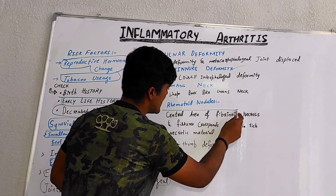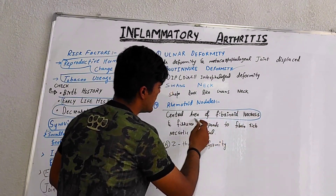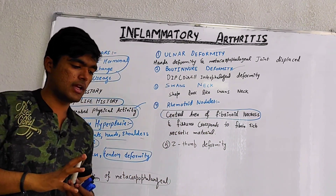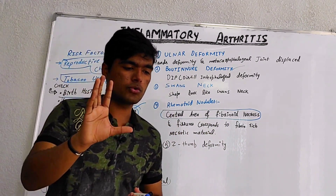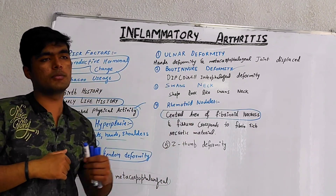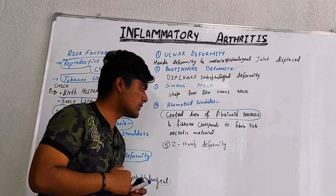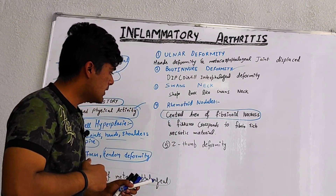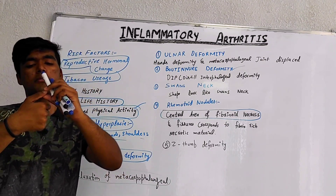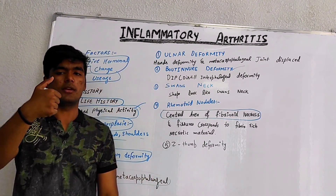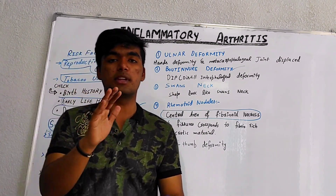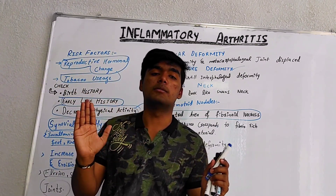The Rheumatoid nodule is a key point. It is basically a central area of fibrinoid necrosis — wherever necrosis occurs in the central area, that is fibrinoid necrosis associated with Rheumatoid Arthritis. Z-thumb deformity is basically where the thumb shape looks like the letter Z.